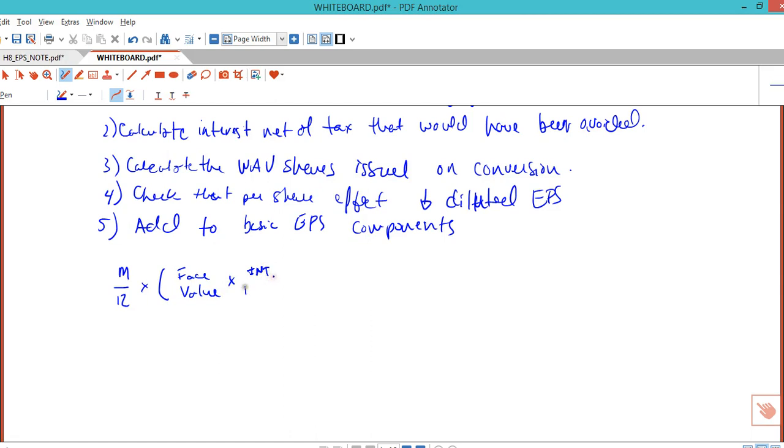times the interest rate, times one minus the tax rate, because this interest expense was deductible. Repeat the M over 12 because it affects both the numerator and the denominator.